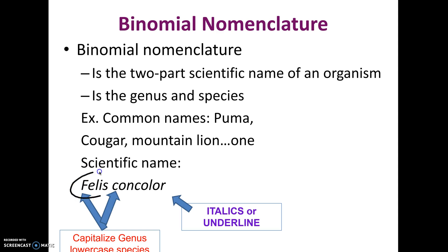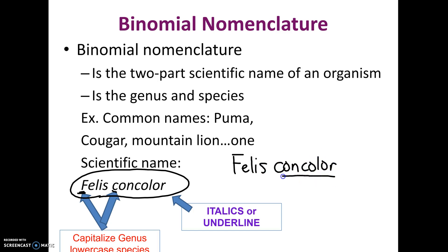The scientific name can either be written in italics with a capital genus and lowercase species, or it could be underlined if you were writing it yourself. If two organisms are the same species, that's the closest relationship you can have — it means they live and mate and make fertile offspring together.